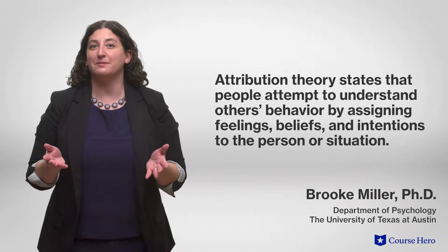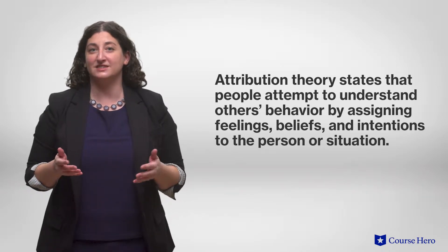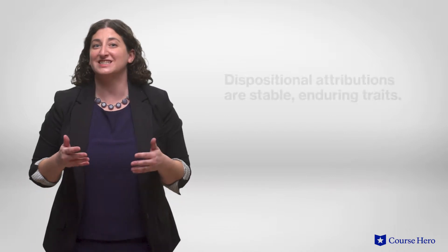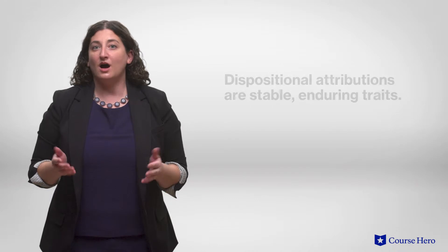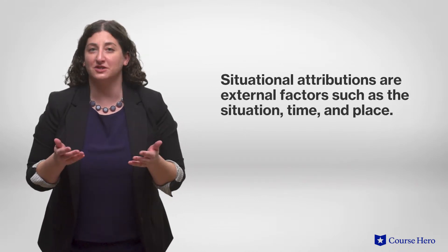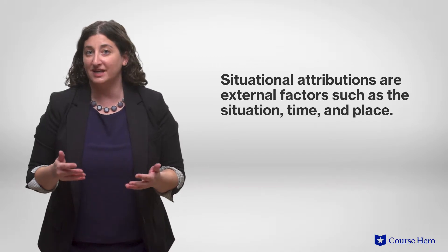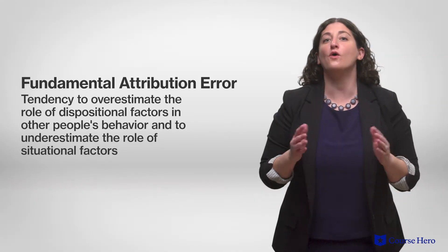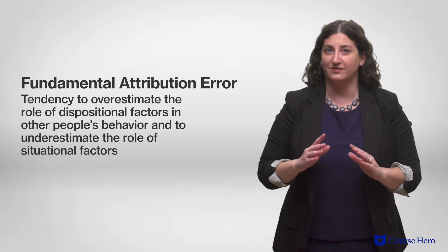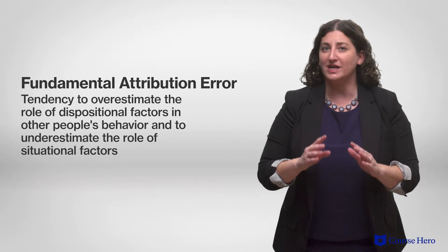Attribution theory states that people attempt to understand others' behavior by assigning feelings, beliefs, and intentions to the person or situation. Sometimes we believe that behavior is due to dispositional attributions, or stable, enduring traits. Other times we might consider situational attributions — external factors such as situations, time, and place. The fundamental attribution error is the tendency to overestimate the role of dispositional factors in other people's behavior and to underestimate the role of situational factors.